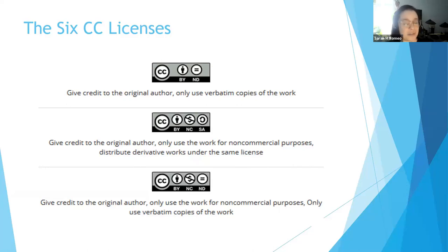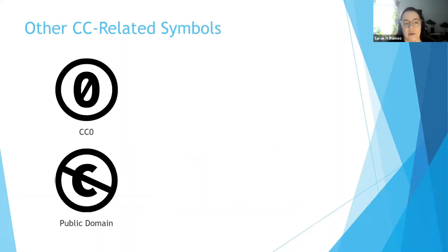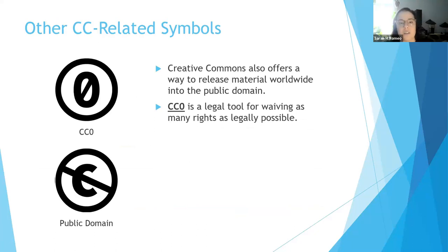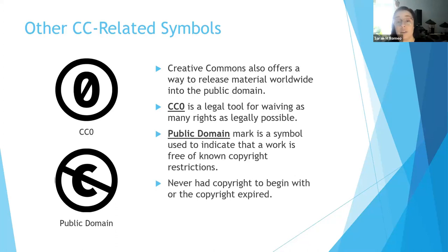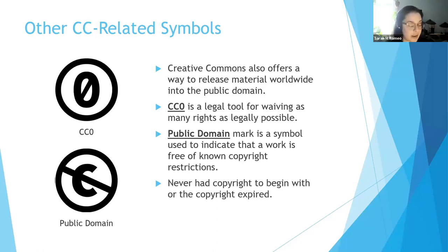Try not to get too hung up on these details right now — we have plenty of resources to help you decide. Creative Commons also offers a way to release material into the public domain using the CC0 tool, a legal tool for waiving as many rights as possible. Public domain indicates a work is free of known copyright restrictions — either it never had copyright or the copyright has expired. These marks mean the work is free from all restrictions and can be used in any way, including without attribution.